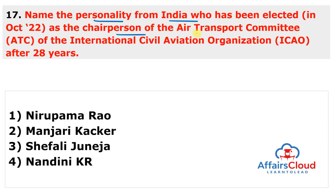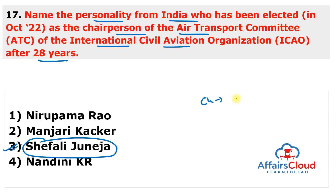Next question: who from India was elected as Chairperson of the Air Transport Committee of the International Civil Aviation Organization after a gap of 28 years? The answer is Shefali Juneja. Dr. Shefali Juneja was elected as Chairperson of the Air Transport Committee (ATC) of ICAO, a specialized agency of the United Nations. She became the first Indian to hold this position in 28 years.